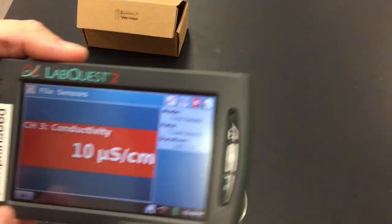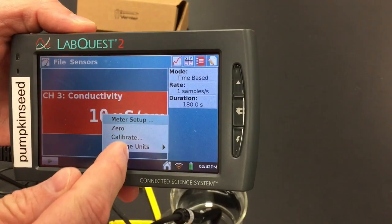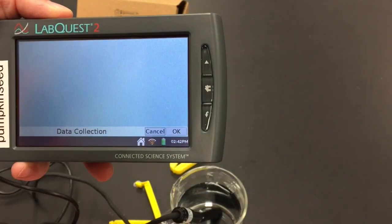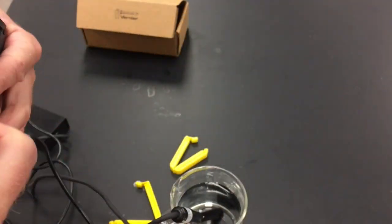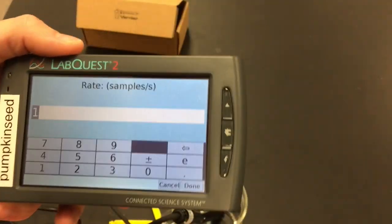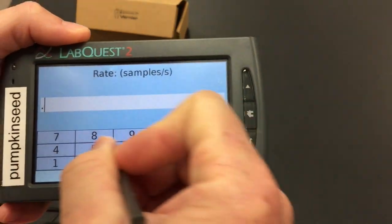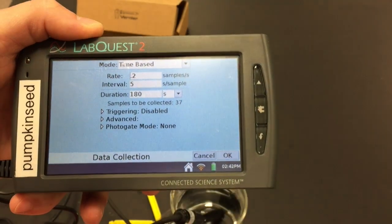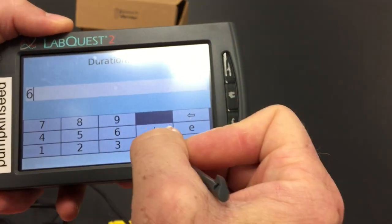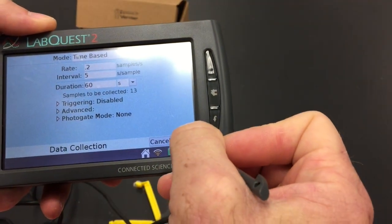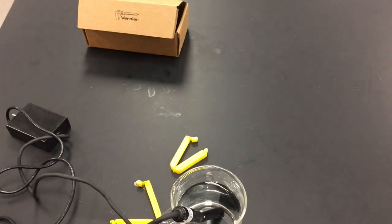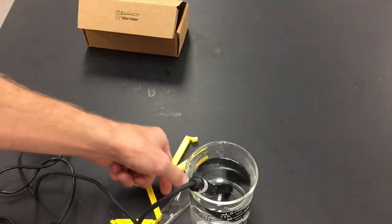I'm going to change the units to milligrams per liter. I'll also change the collection parameters. There's a stylus inside the Lab Quest if you want to use that instead. I'm going to change the rate to 0.2, leave the interval, and change the duration to 60. The Lab Quest is all set up, conductivity meter is in the purified water, and now I've got to get the dialysis tubing set.